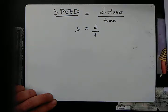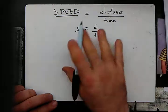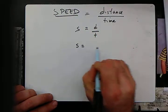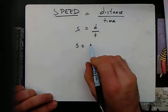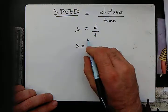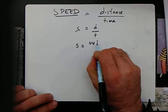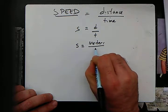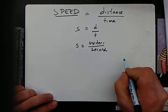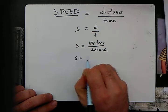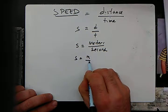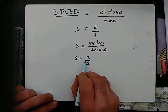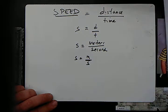Speed is not a fundamental aspect of nature — it's just a ratio of two different things. The units for speed would be meters per second, written as m/s. So we read this unit as 'meters per second.'